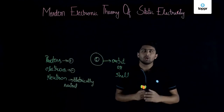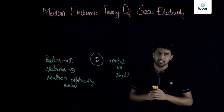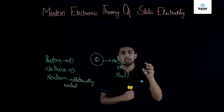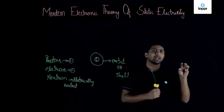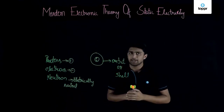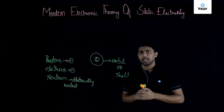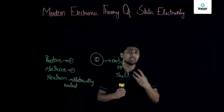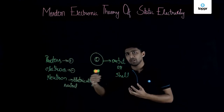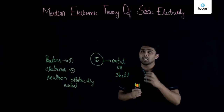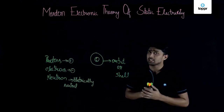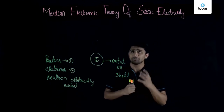Now, what is static electricity? Electrons which are at rest — or we can say charges which are at rest — are called static electricity. If we want to charge a body, as discussed in our previous lectures, we need to transfer electrons. So how can we transfer electrons?